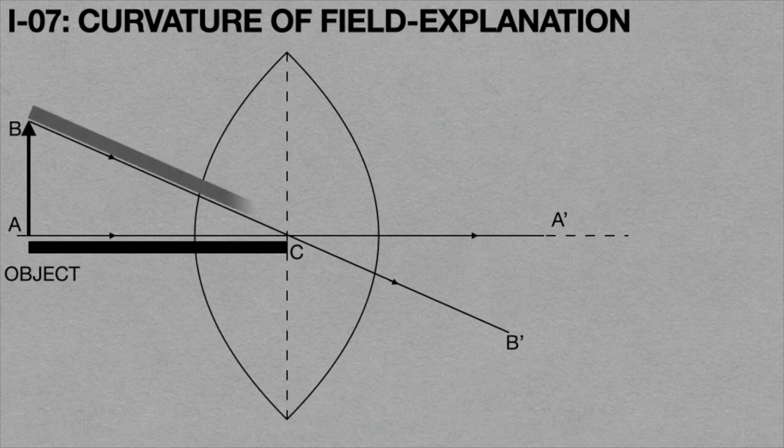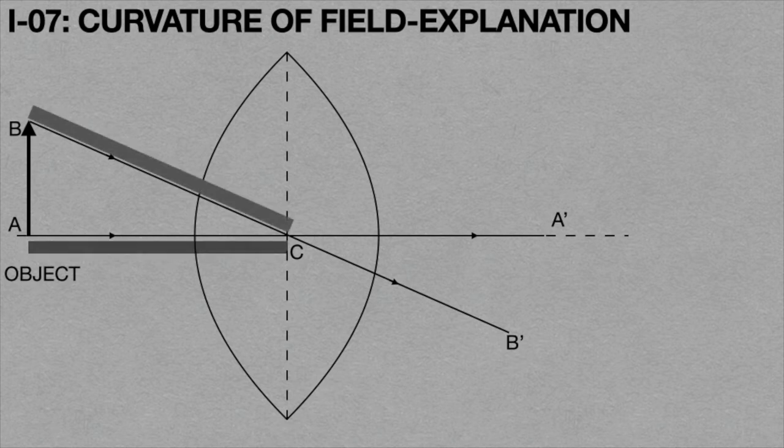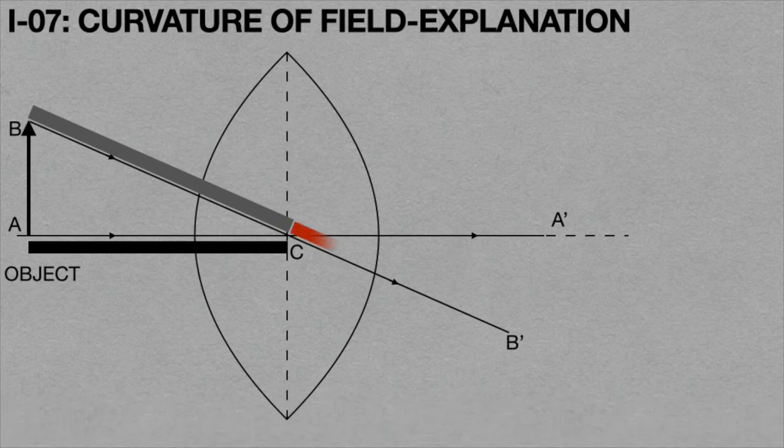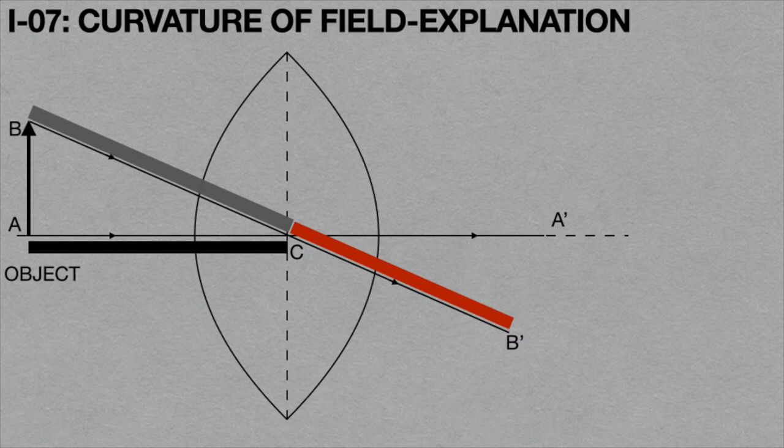Here, the length of light ray BC is greater than the length of light ray AC. Hence, in order to compensate these lengths of AC and BC, a light ray CB dash is formed which is less than the length of light ray BC and forms B dash image of B.